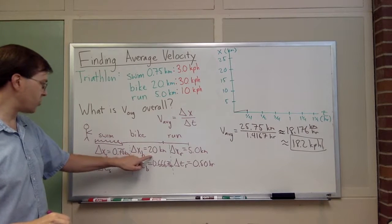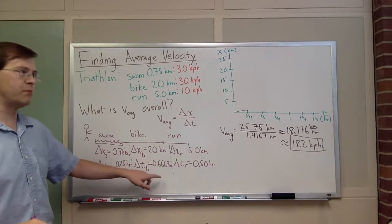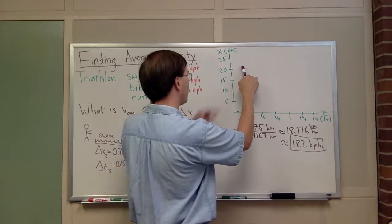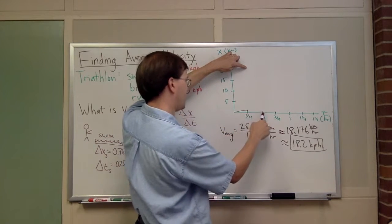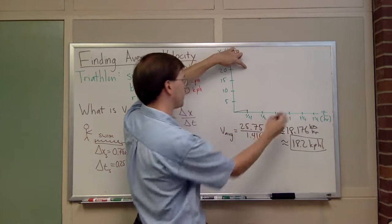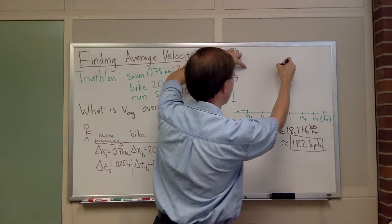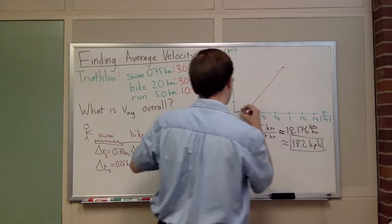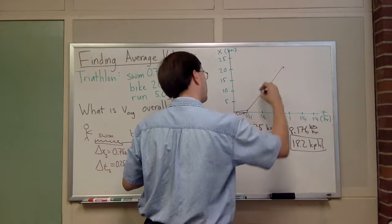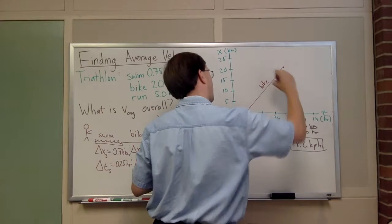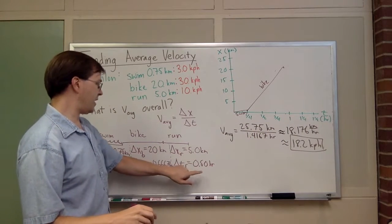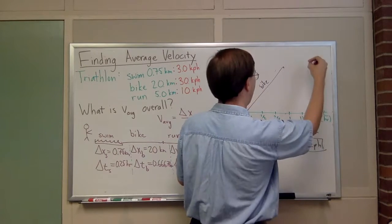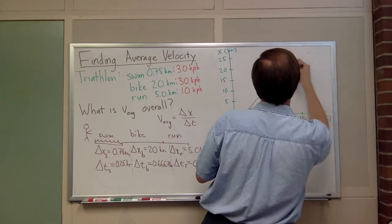Next, I go 20 additional kilometers in two-thirds of an hour, 40 minutes. So 20 kilometers more is going to be at this level, and 40 minutes is going to be here basically. So I'm going about here. This is my swim, this is my biking. Then the run was five more kilometers and half an hour. My half an hour and my five additional kilometers gets me up to here. So here's my run.